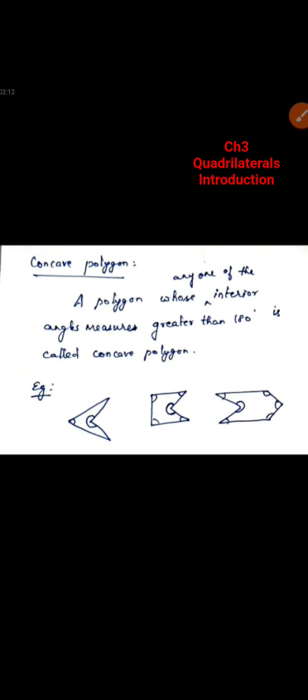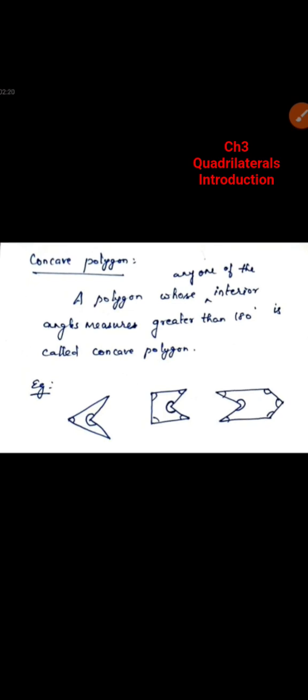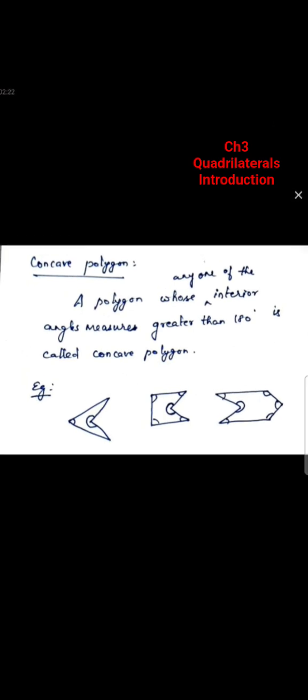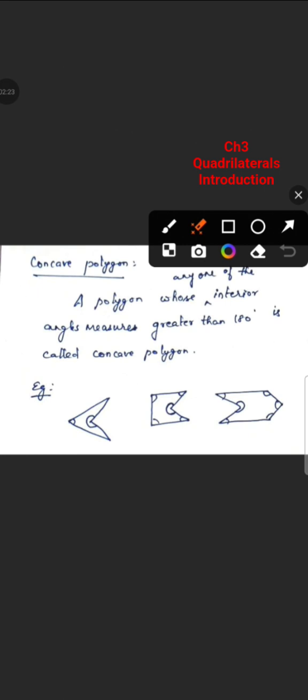If the inner angle of the diagram is greater than 180 degrees, the polygon is a concave polygon. At least any one of the inner angles — not all, any one — being greater than 180 degrees makes it a concave polygon. I hope you all understand.